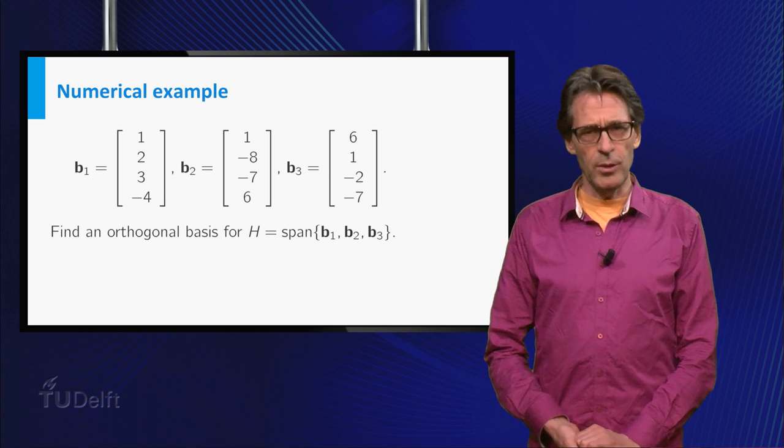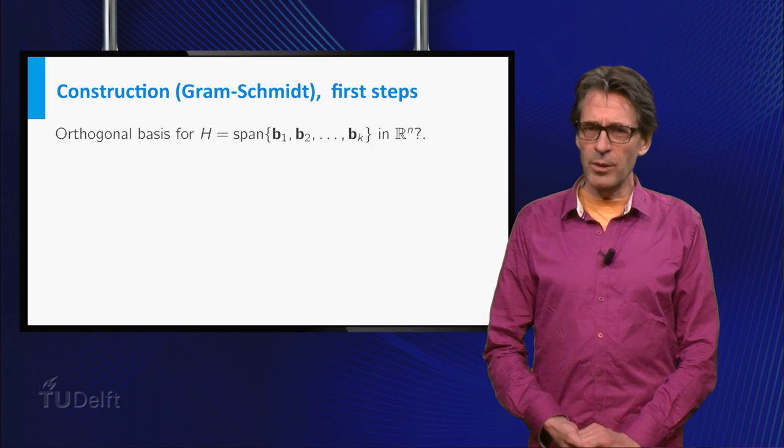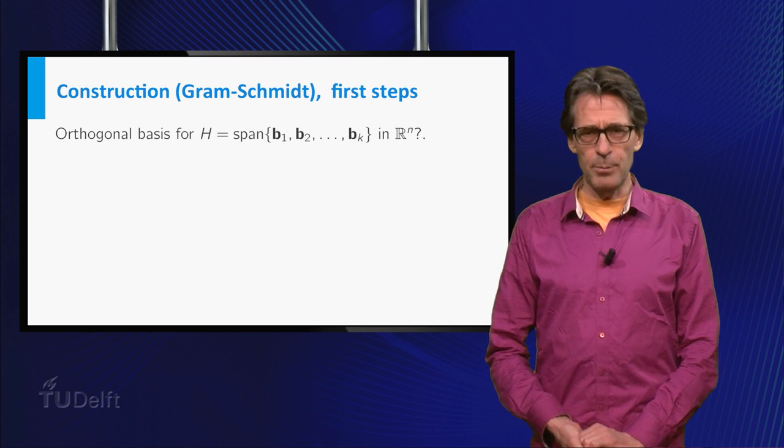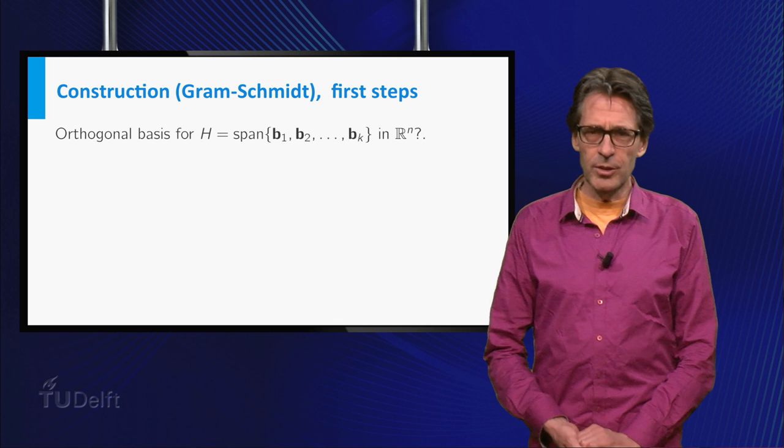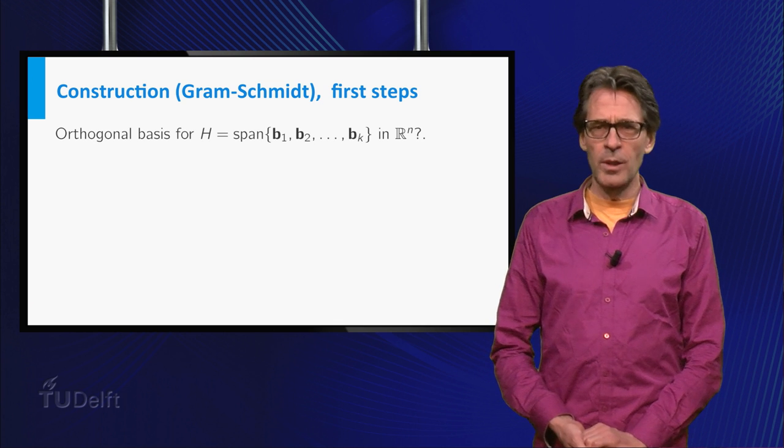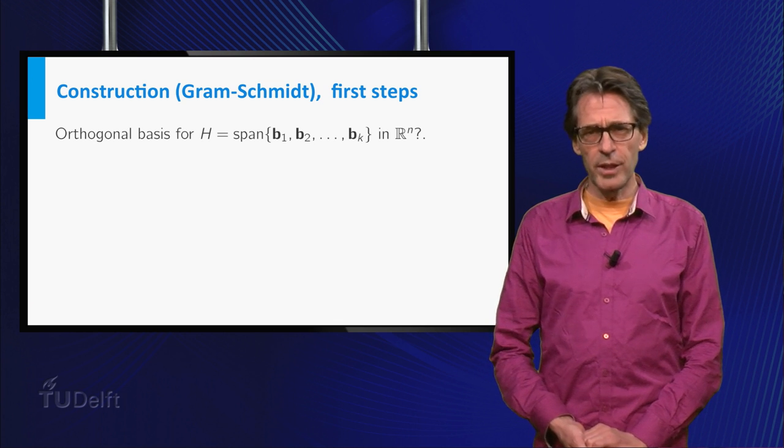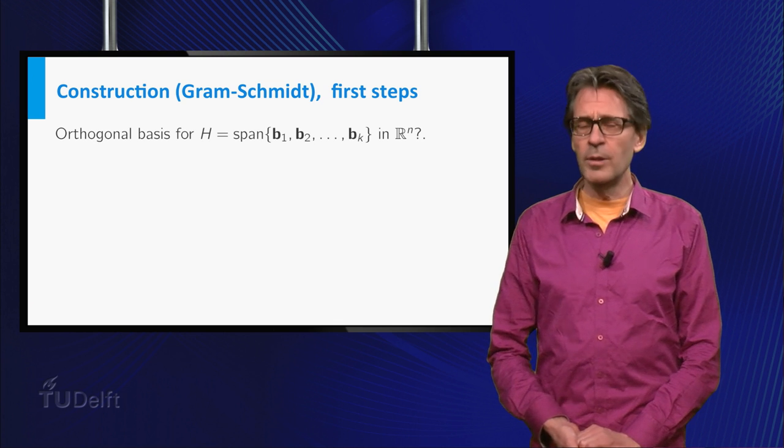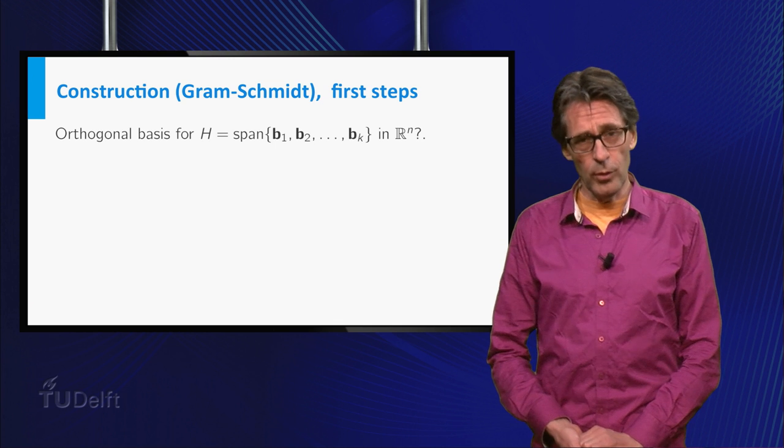Let's start with the general problem. We will generate an orthogonal basis u1 up to uk in k steps. At each step we will build a u-vector such that the first i u-vectors have the same span as the first i b-vectors and, moreover, the u-vectors are orthogonal.